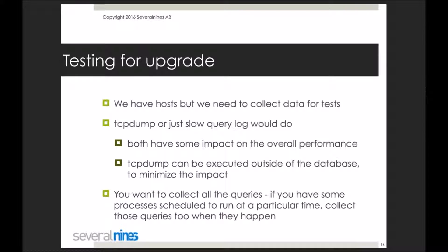So we have 5.6 and 5.7 hosts with the same data, but we still need to collect queries for the tests. There are numerous ways to do this — among others, you can capture the network traffic to the database using TCP dump, or you can just enable the slow query log.